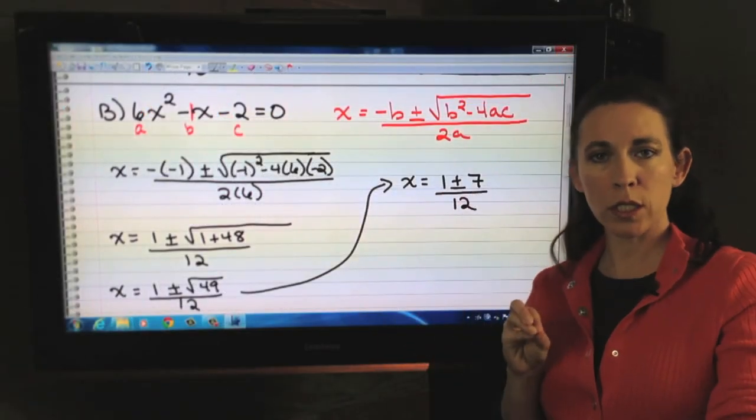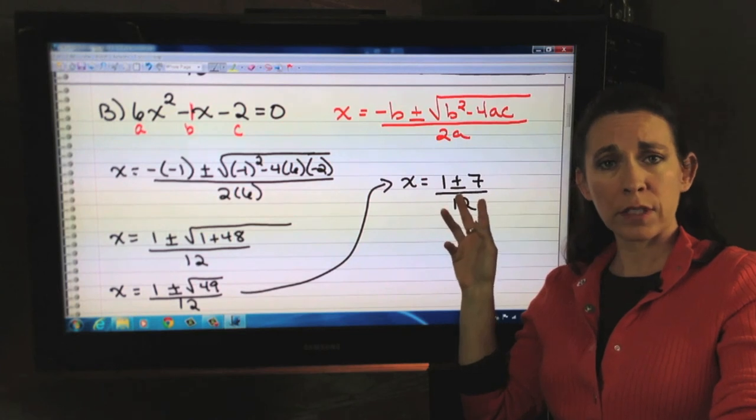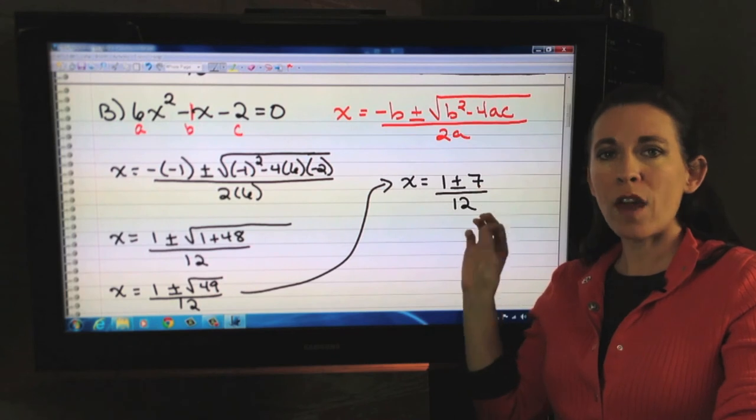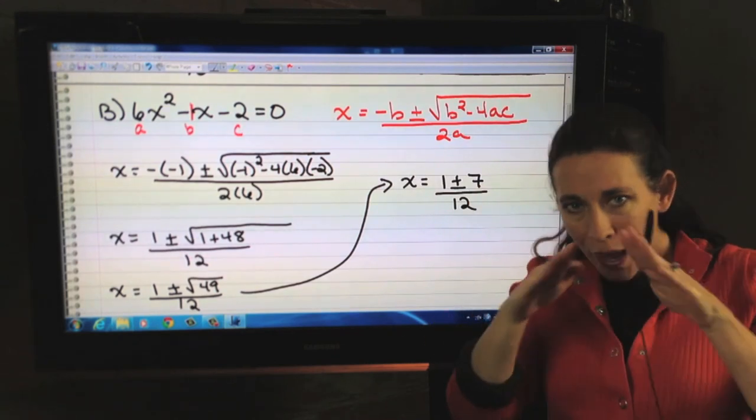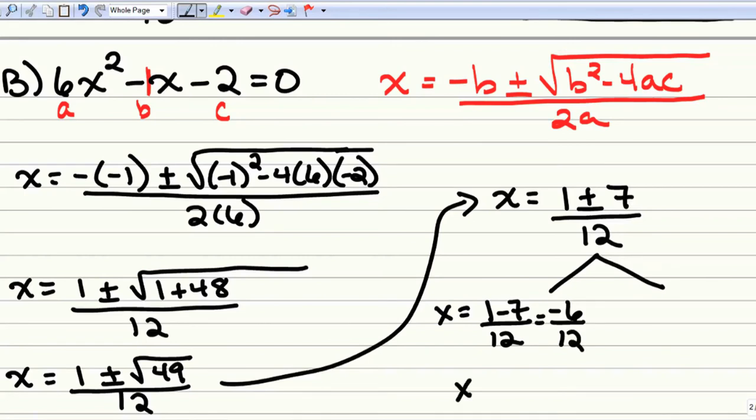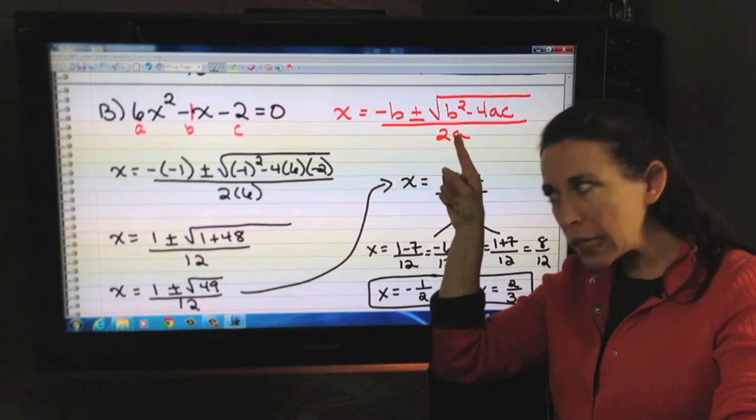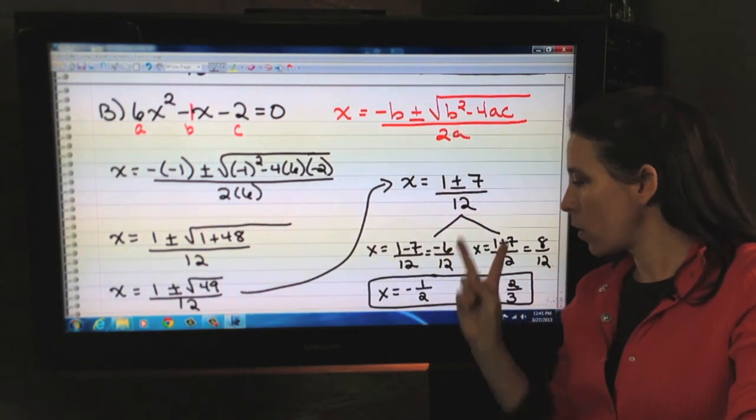But, remember this plus or minus gives us two different results. Even though some teachers allow you to leave your answers with the plus or minus if you've got the radical there, if you come up with a rational answer, in other words, you have a perfect square, reduce it to the numbers that you're familiar with. Go ahead and give those two results. So, we have x equals 1 minus 7 over 12, which is a negative 6 twelfths, which reduces to a negative 1 half is one of our results. Then we have x equals 1 plus 7 over 12, which is 8 twelfths, which reduces to 2 thirds. So, there are our two solutions.